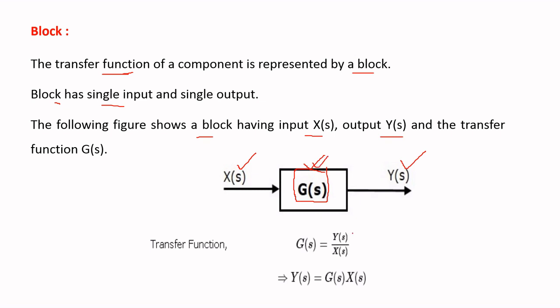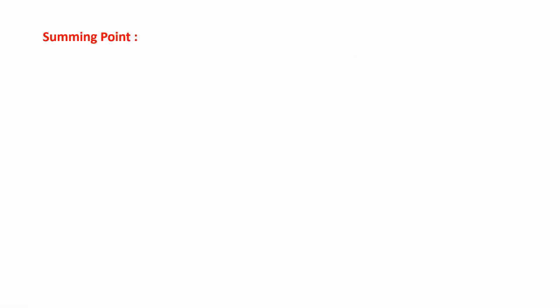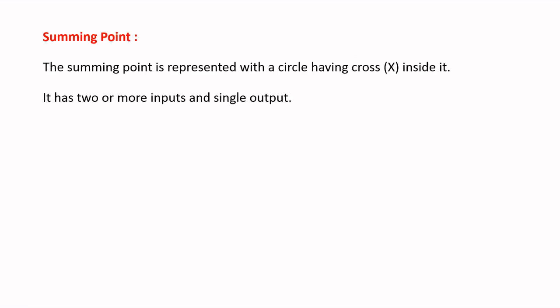The transfer function of this block is given as Y(s) / X(s) = G(s). From this equation we can find the output from the block: Y(s) = G(s) · X(s). This is the representation of a block. Using a block we can find the transfer function of a component. This block consists of a single input and a single output.